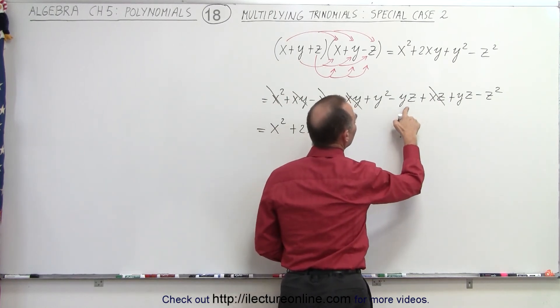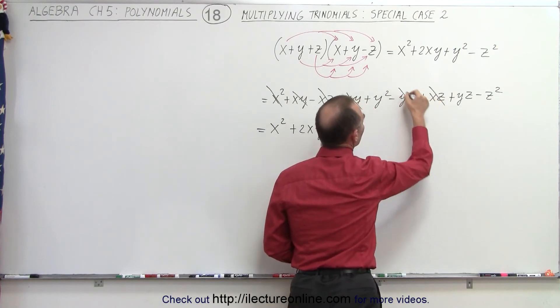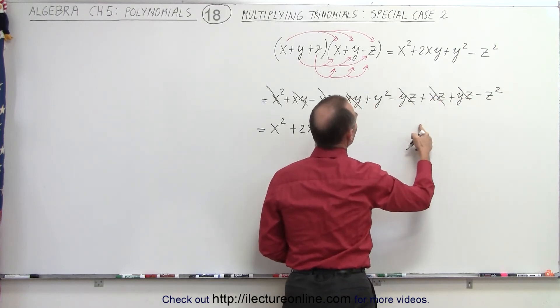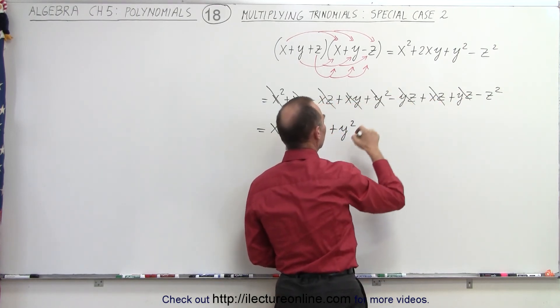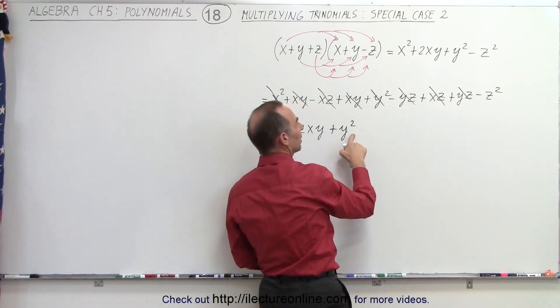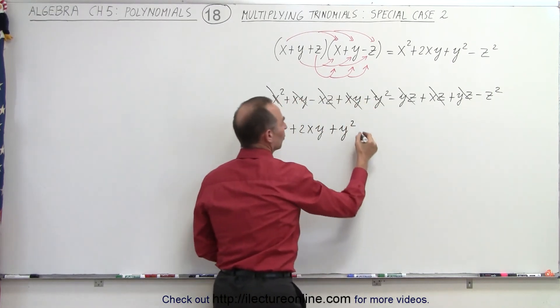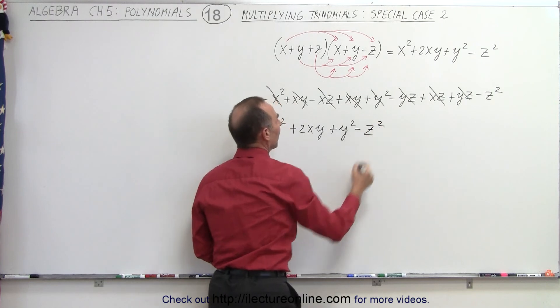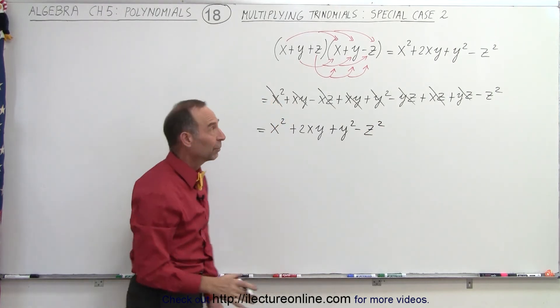Then we have a plus y squared. And here we have a minus yz and a plus yz, so that cancels out as well. And finally, we have one term left. I put the y squared down here. We have a minus z squared, so we put minus z squared down. And notice we have exactly what we have up there.